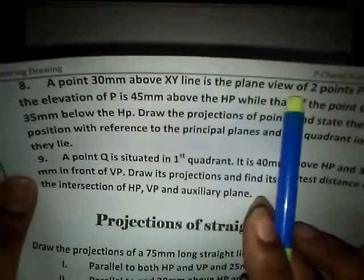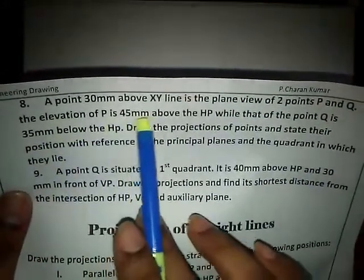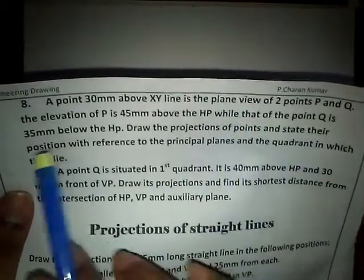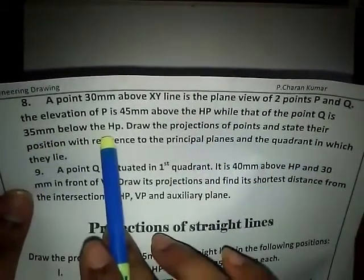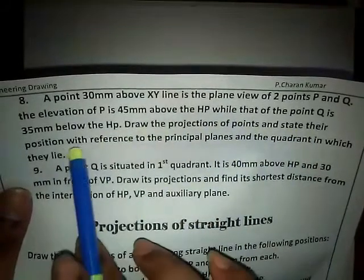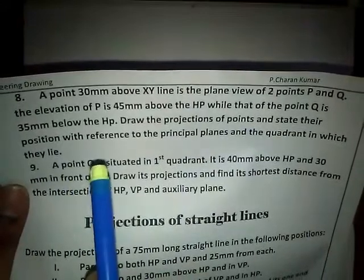A point 30mm above the XY line is the plan view of two points P and Q. The elevation of P is 45mm above HP, while that of point Q is 35mm below the HP. Draw the projections of the points and state their positions with reference to the principal planes and the quadrants in which they lie.